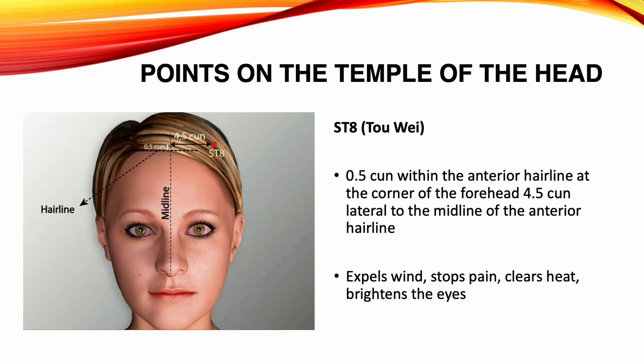Stomach 8, Tau Wei. Location: 0.5 zun within the anterior hairline, at the corner of the forehead, 4.5 zun lateral to the midline of the anterior hairline. Functions: expels wind, stops pain, clears heat, brightens the eyes. Indications: headache, tinnitus, deviation of the mouth and eye, facial pain, face muscle spasm, blurred vision, eye pain, seizures.